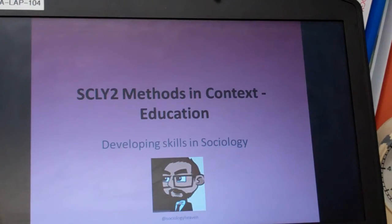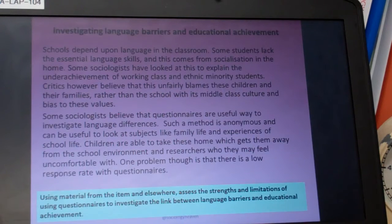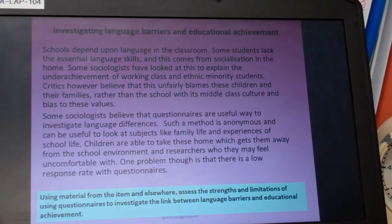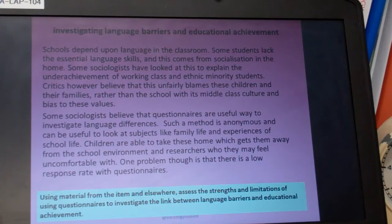The following has been developed to help students think more about connecting items and context with what they know about various topics in education for Question 5 on the slide 2 paper. We're going to take the context of investigating language barriers with educational achievement, where an item discusses how language skills are vital for success within middle class schools, but socialisation and barriers get in the way for working class and minority homes. The question asks students to use materials from the item and elsewhere to assess the strengths and limitations of using questionnaires to investigate this link.